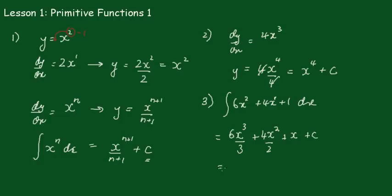And don't leave it like that. Tidy up. 3 and the 6 goes 2, so 2x cubed. Plus 2x squared. Plus x. Plus C is our final result. And that's how you integrate. All right.